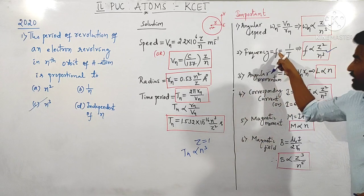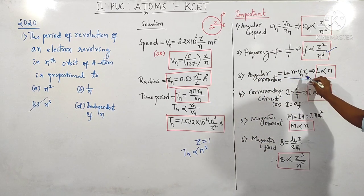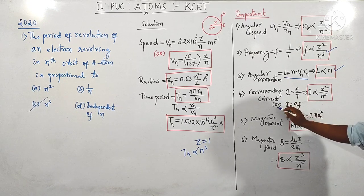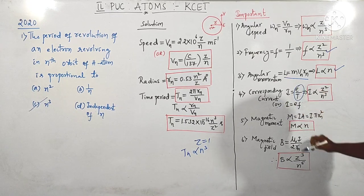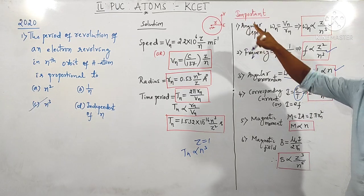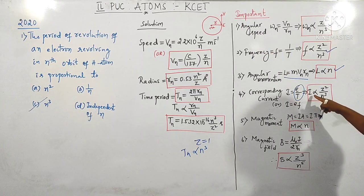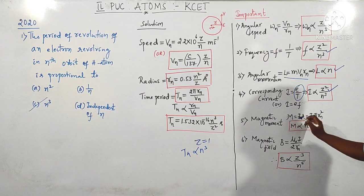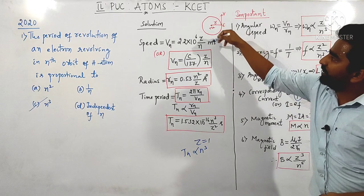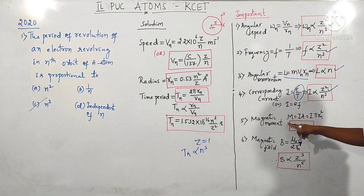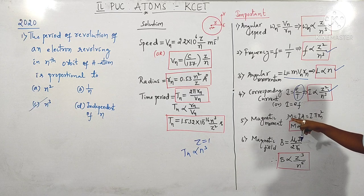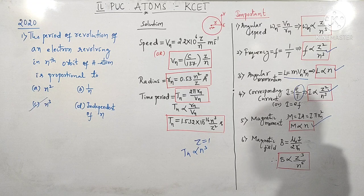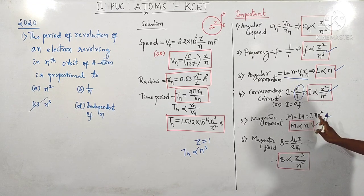Time period and frequency are inversely proportional. Angular momentum is given by mvr, and is directly proportional to n. Current is charge divided by time; since electrons are revolving, I is proportional to Z²/n³. When an electron is revolving in a hydrogen atom, there will be a magnetic moment. The orbital magnetic moment is given by I × A, and magnetic moment is directly proportional to n — it is independent of Z.